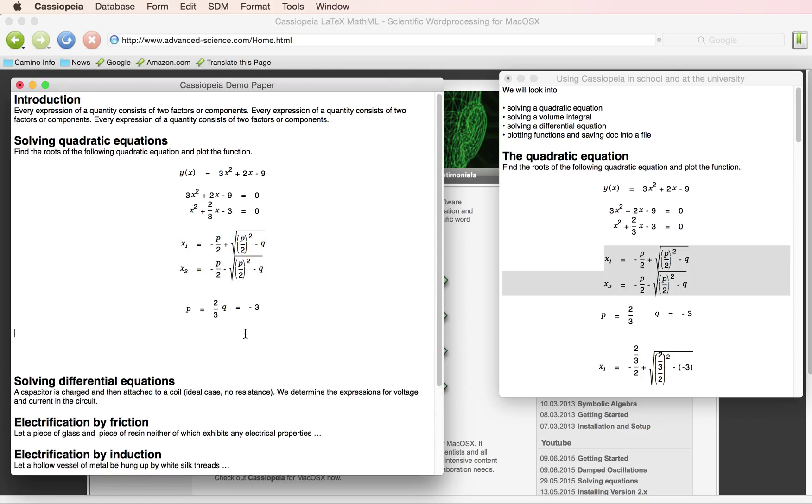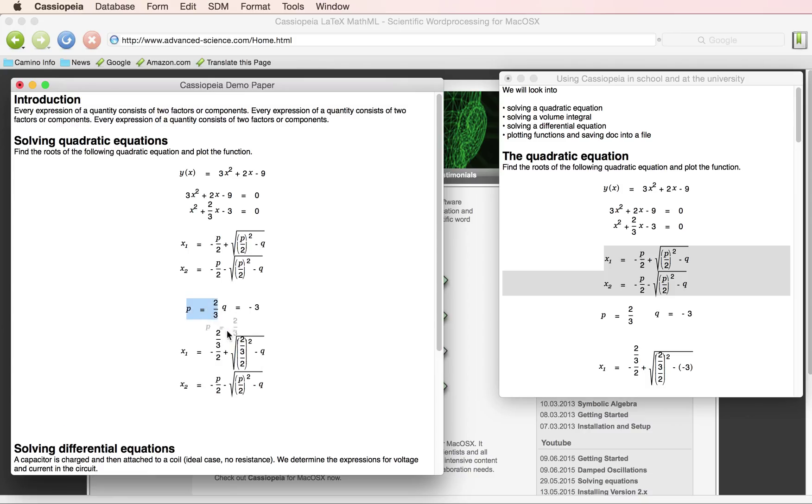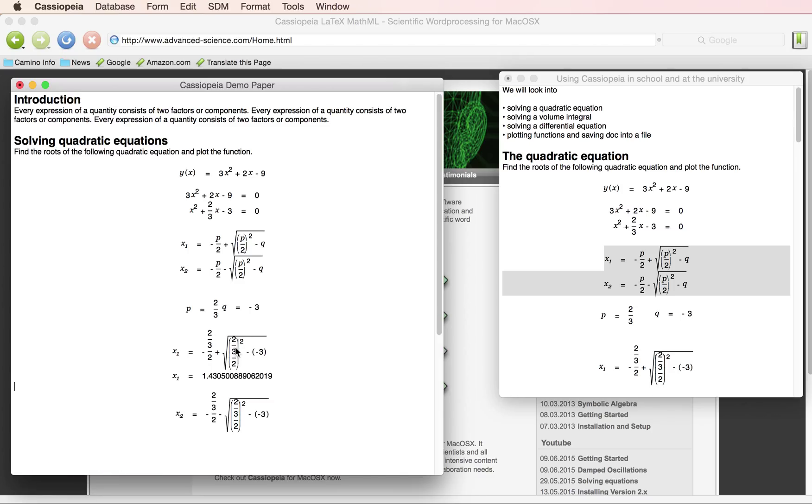We can simply substitute these expressions into the pq formula via drag and drop, and calculate the results with a command alt double click.